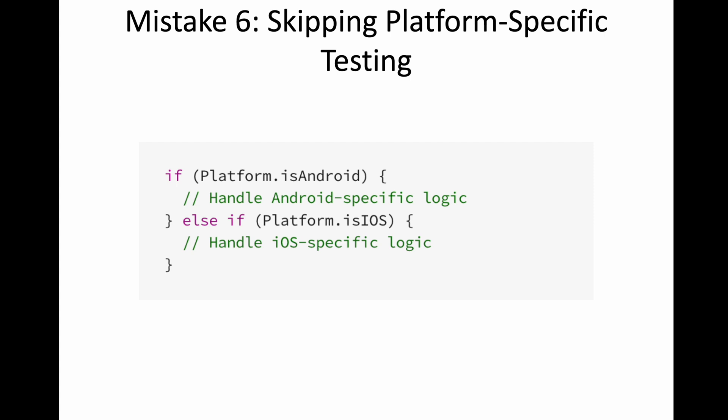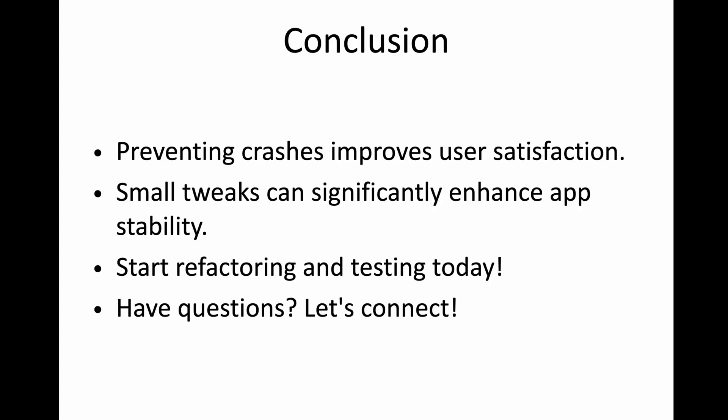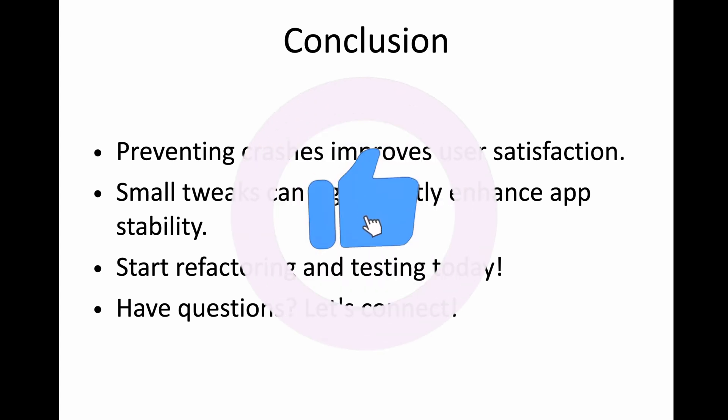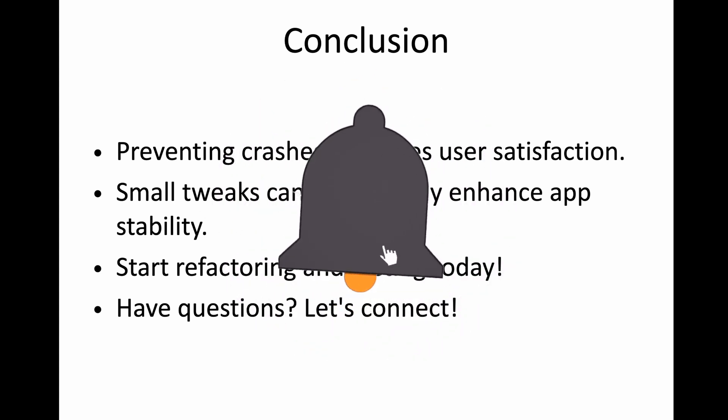Next, skipping tests for platform-specific behavior. You may develop your app for both Android and iOS, but you should test your app on both platforms so they don't crash. Avoiding crashes is actually very easy if you just follow these steps — most crashes should be avoidable. If you liked it, don't forget to subscribe and hit that like button. Thank you.